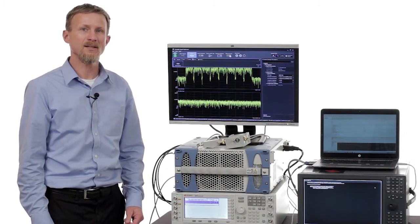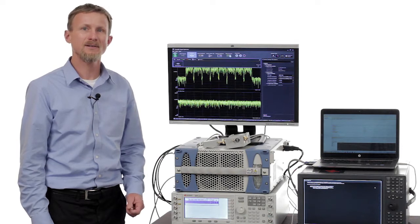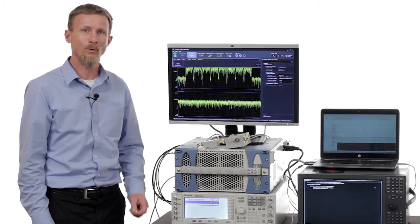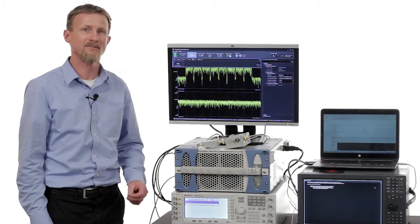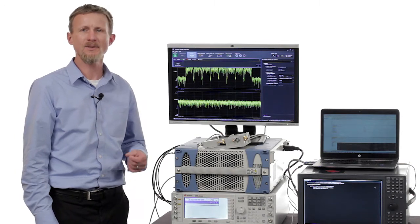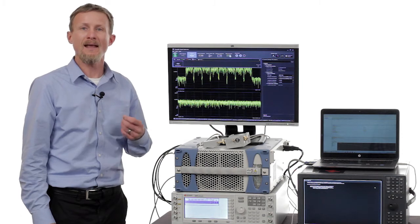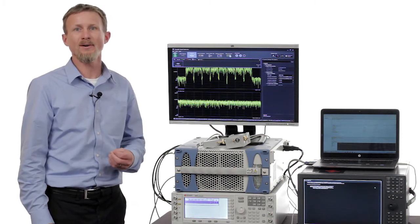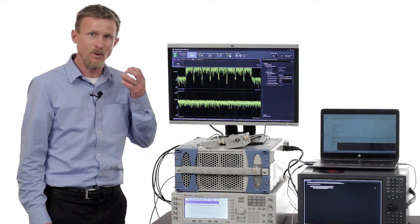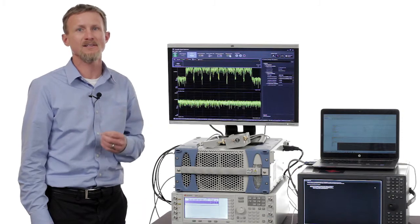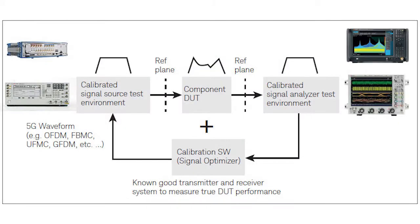The software does three important things: it can generate signals, it can analyze signals, and most importantly, it can calibrate right to the device plane of interest. Our customers have told us that calibrating is a big job for them. The reason this is important is that you want to see the true characteristics of your device under test — you don't want to see the characteristics of the cables, adapters, and test equipment. So we'll show you how to use the software to make measurements right to the device plane of interest.